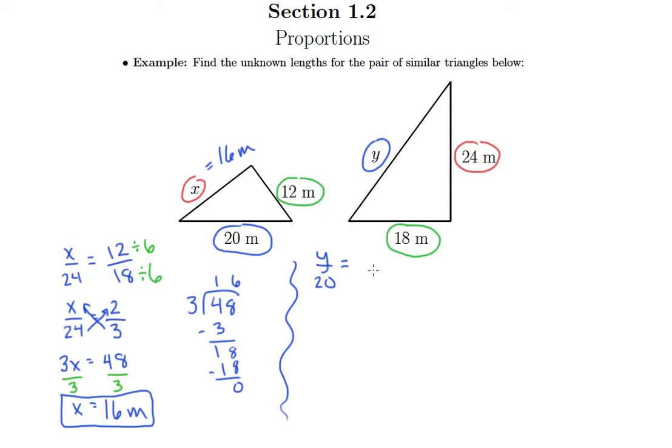So we had y coming first, or sorry, coming on top. And so I better put 18 on top in my other ratio because 18 also comes from the bigger triangle. I'll put 12 on bottom. And again, we've already discussed how we can divide the top and bottom of 18 12 by 6, and so that'll again make things go a little more smoothly. So y over 20 equals 3 over 2.